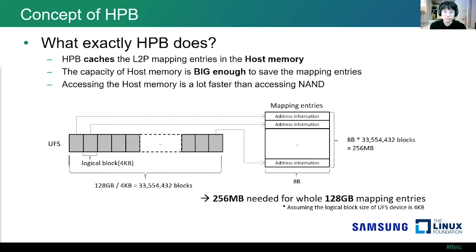Even in an embedded system, the host memory is still big enough. The host memory capacity continues to grow today. Also, accessing random memory is still faster than accessing NAND flash memory. You might worry about host memory usage, but let me calculate the actual usage. Assuming the UFS logical storage space has a total capacity of 128 gigabytes, and UFS manages internal storage space in 4 kilobyte logical block sizes, there will be about 33 million blocks in total.